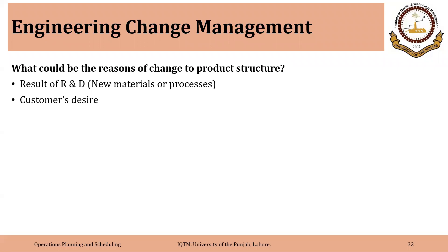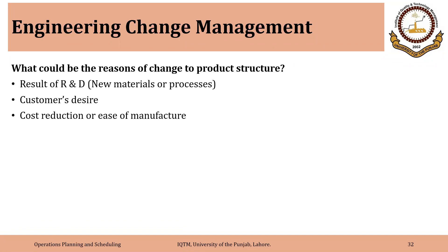Another reason could be customer desire — the customer requires a certain new feature, new material, or new characteristics of the product, which could change the definition of the product structure. Cost reduction or ease of manufacture could also be a reason, pushing us toward a better product structure through better materials, better processes, or elimination of certain components or features.